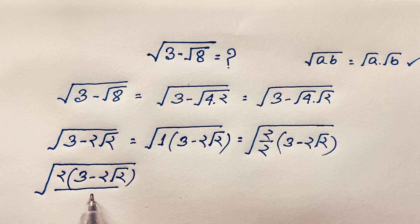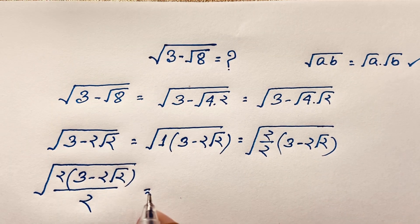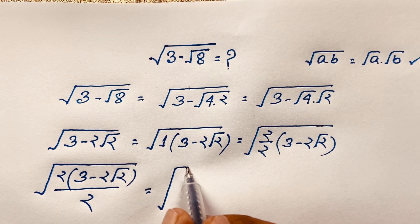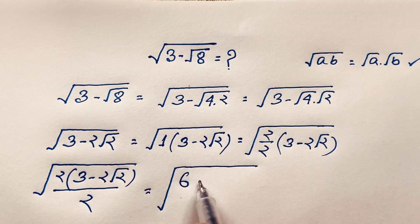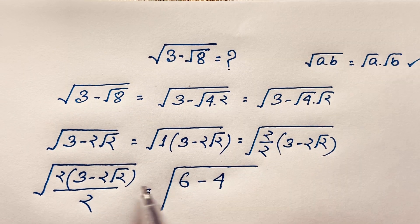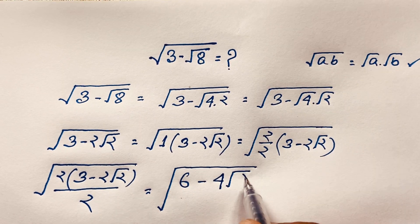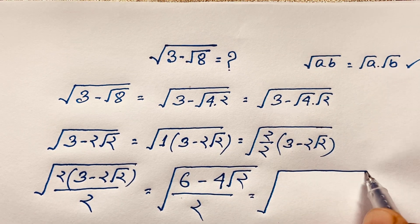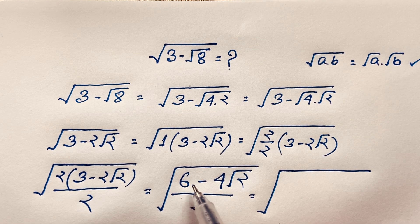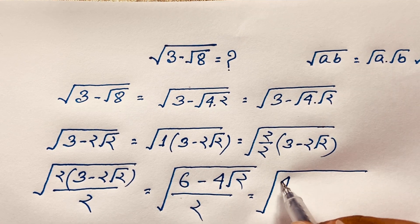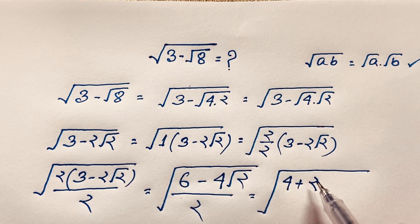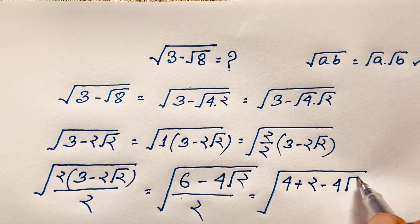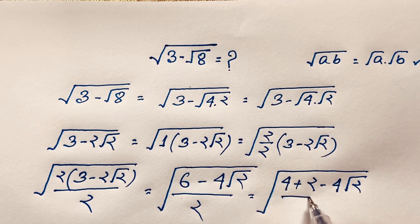If I multiply 2 times 3 it will be 6, and 2 times 2 is 4. So the expression becomes square root of (6 minus 4 square root of 2) over 2.